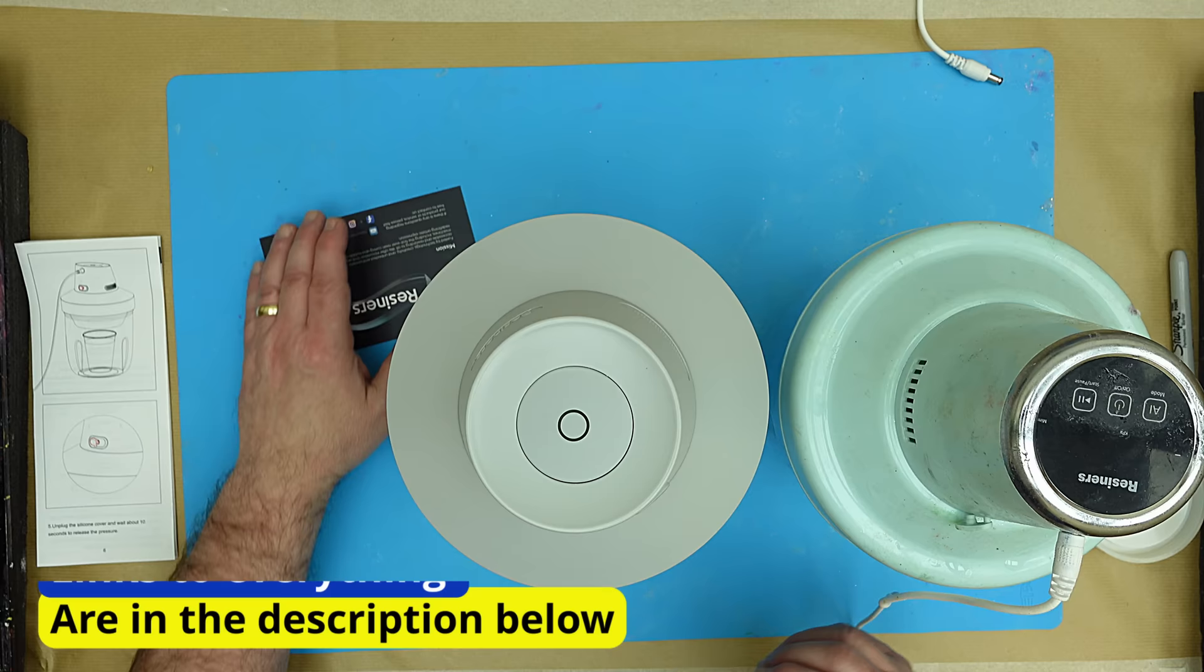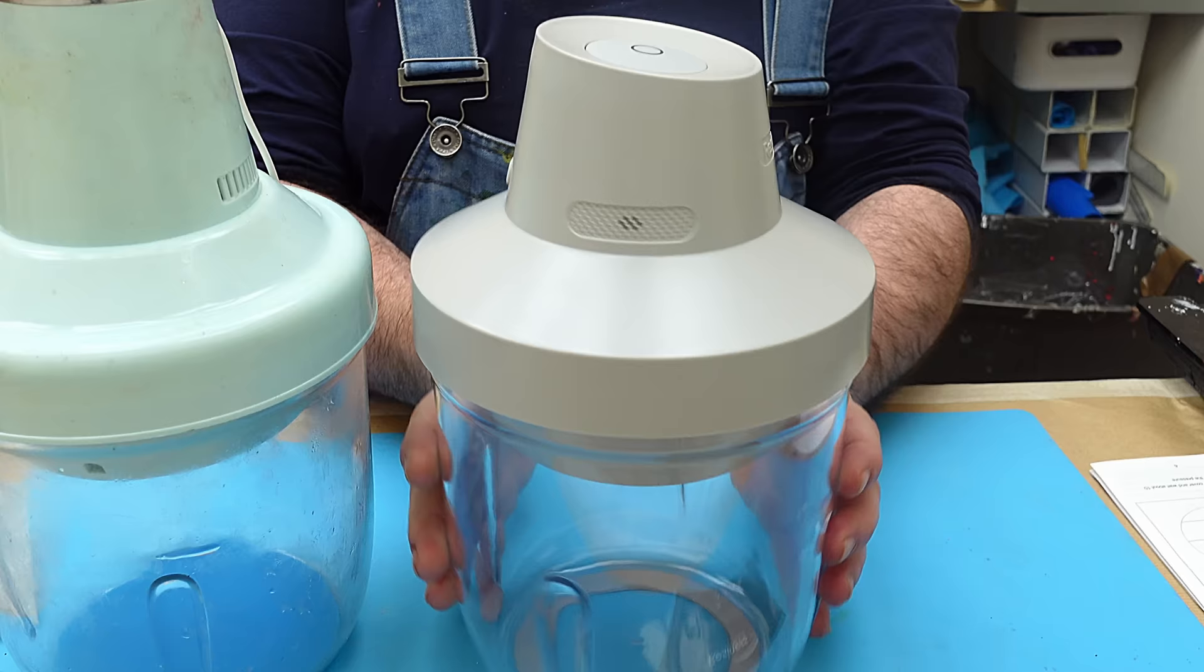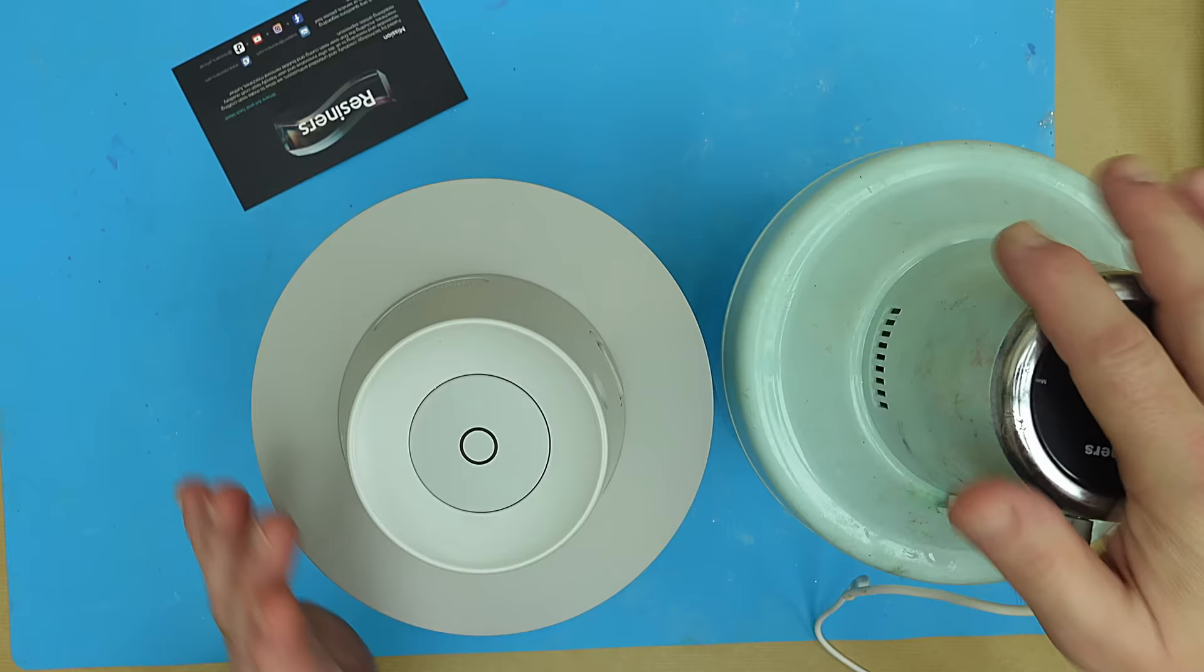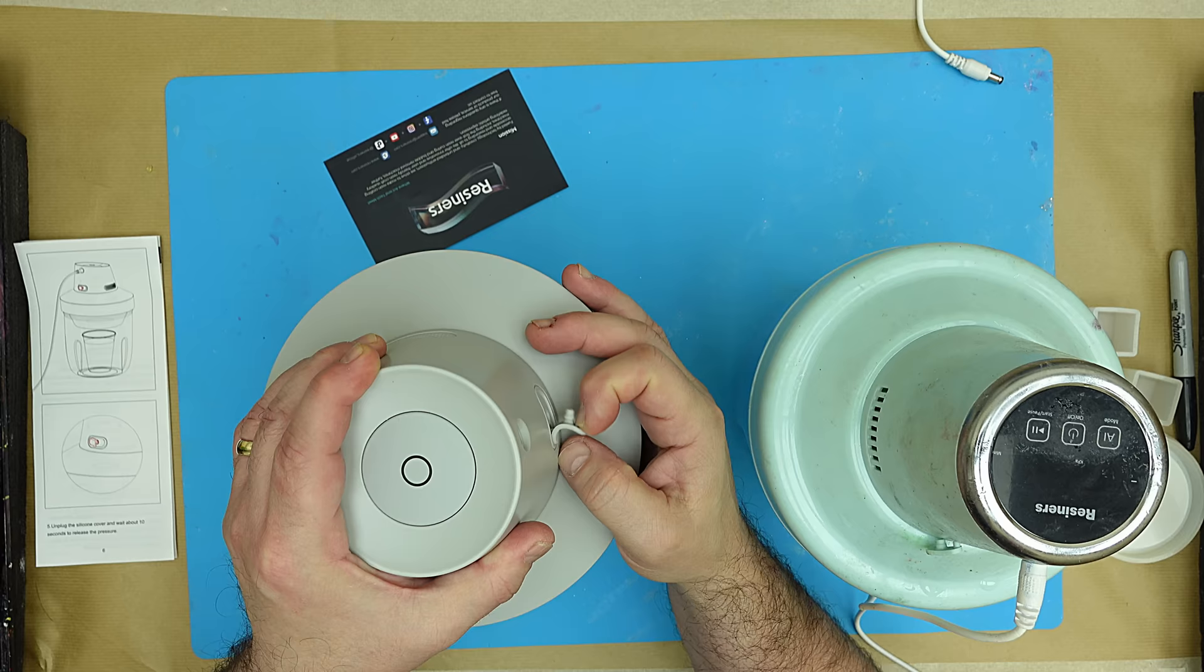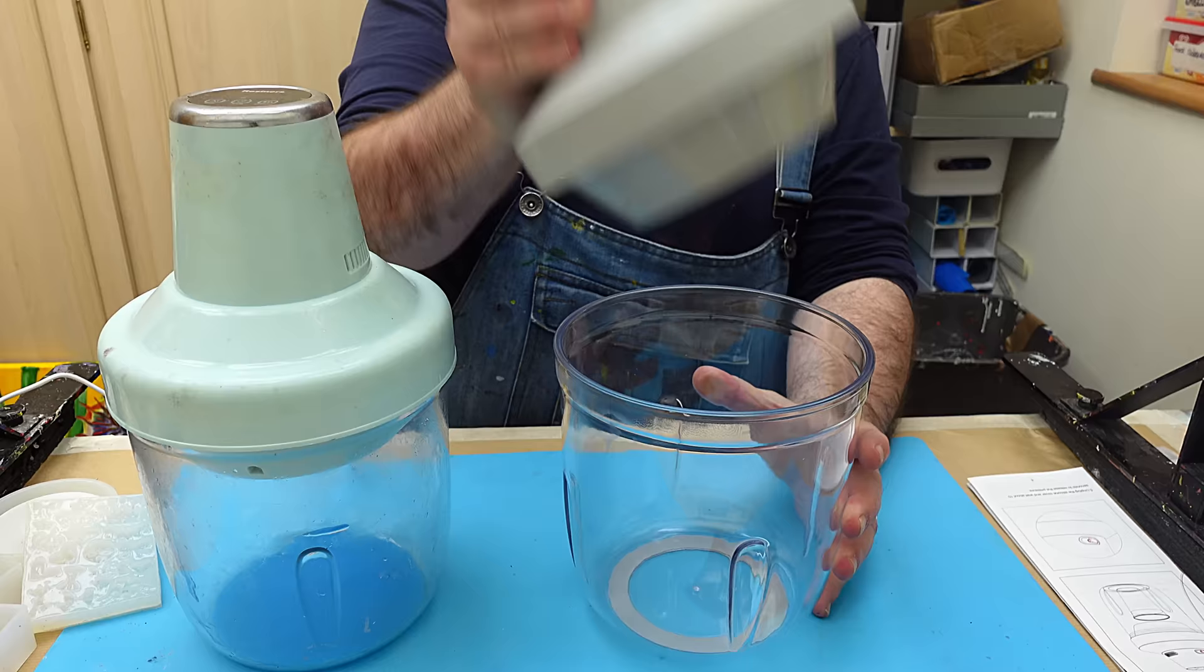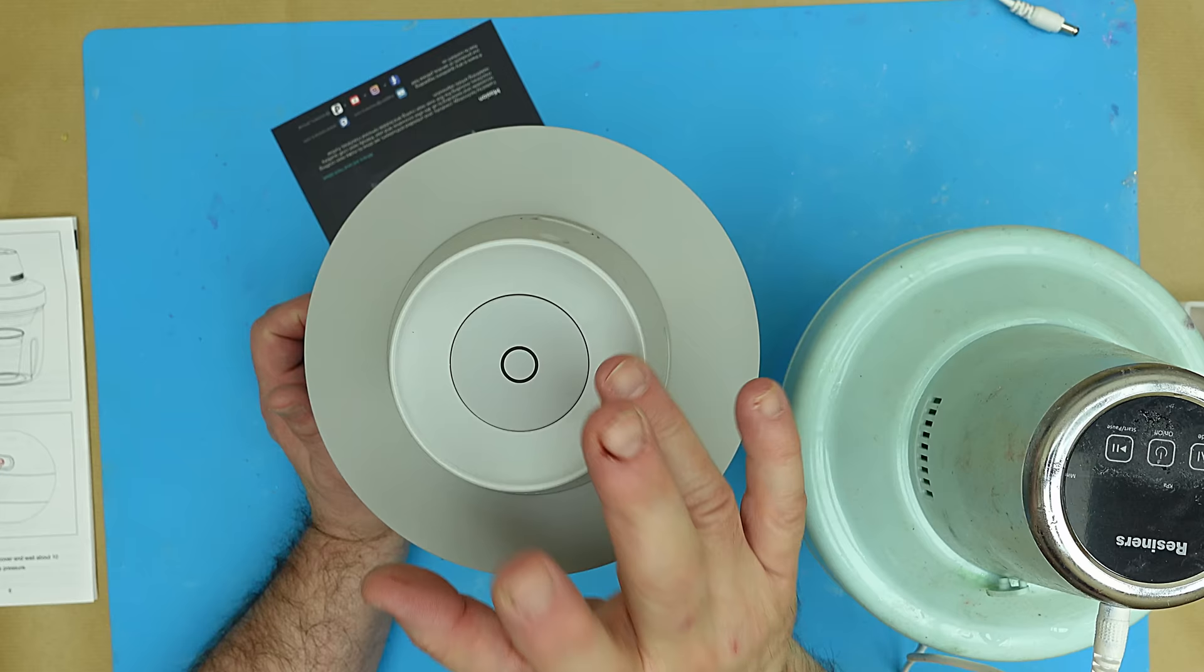Well the great news is Resiners have brought out a new bubble extractor for resin. Now I haven't tried this yet but I'm going to give it a test now. In comparison to the other one it looks like it's exactly the same size. The release valve is slightly larger but the internal bit is just the same. The difference is it only has a one button operation. You push that button and it will degas your resin.